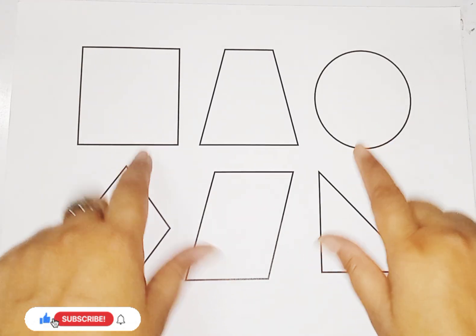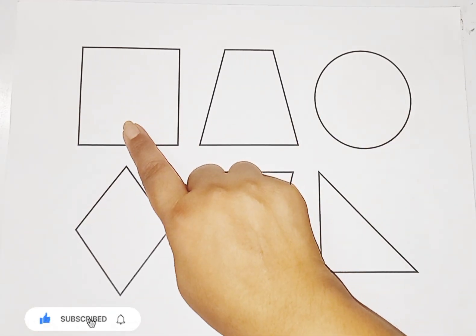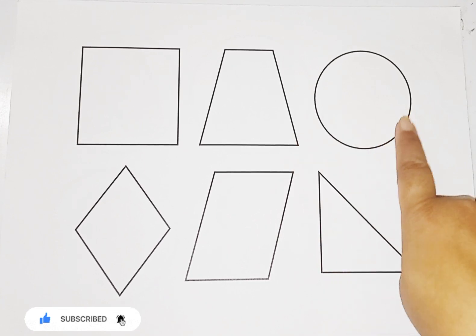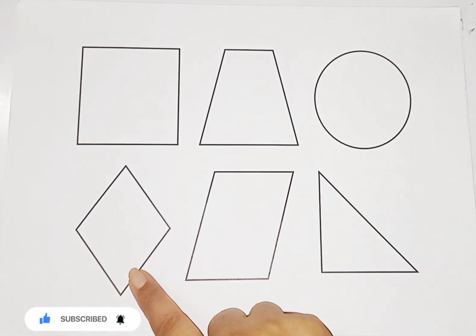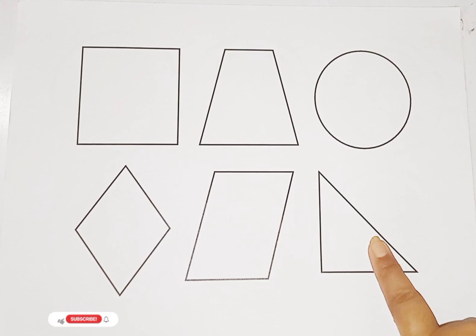So kids, now we learn some 2D shapes. Square, trapezium, circle, rhombus, parallelogram, right triangle.